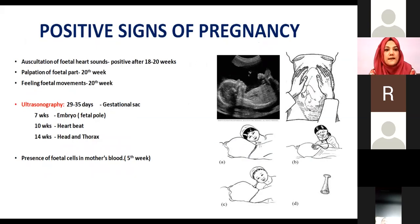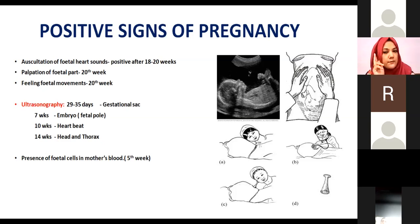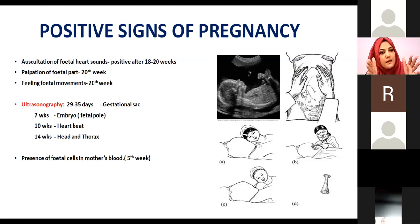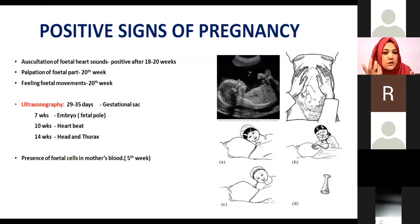The positive signs of pregnancy are the conclusive signs. The first is auscultation of fetal heart sounds using a simple stethoscope on the abdomen — audible only after 18 to 20 weeks. The second is visible fetal movement, which can be seen externally on the abdomen due to continuous body movements of the fetus from 20 weeks onwards.